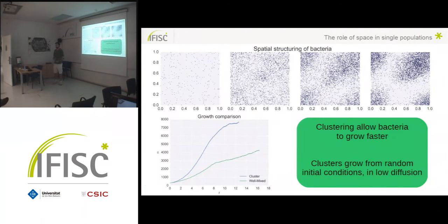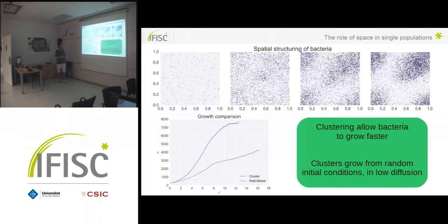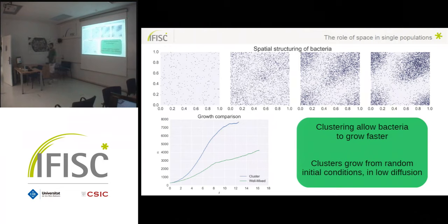Moving to the spatial description, we can see that when bacteria grow in a cluster, growth is faster than in the well-mixed approximation. If you start with random initial conditions, you will observe this clustering. This arises because stochastic birth and death reactions with local birth reactions give rise to clusters. Quorum sensing is also relevant here: bacteria in dense points are more likely to activate, and when they activate they reproduce faster, enhancing cluster growth and affecting spatial structure.